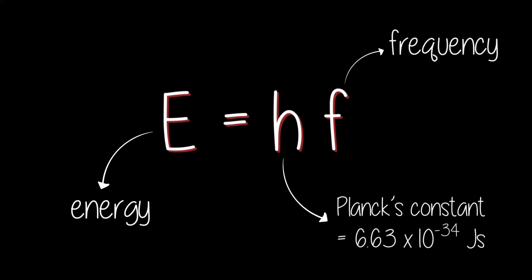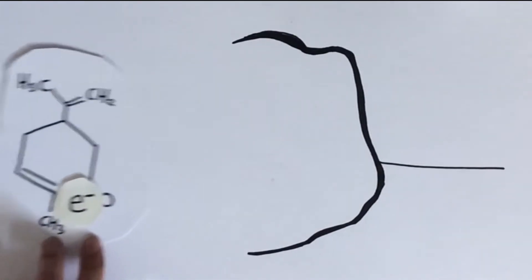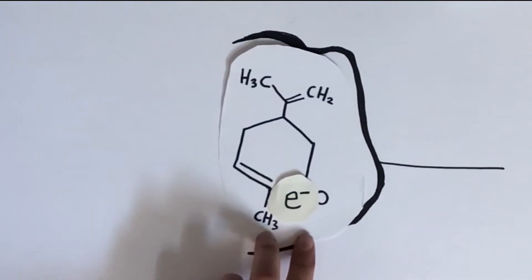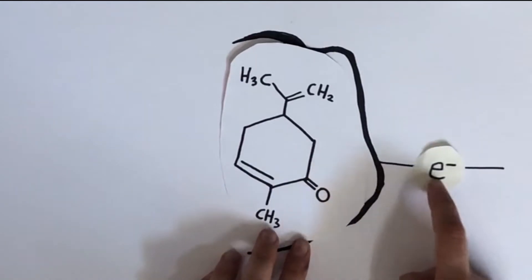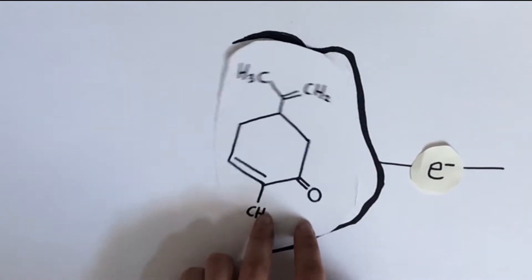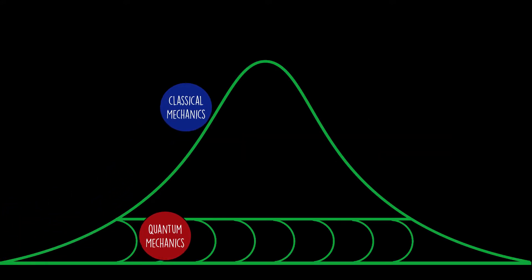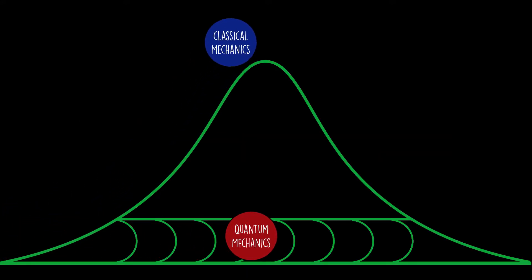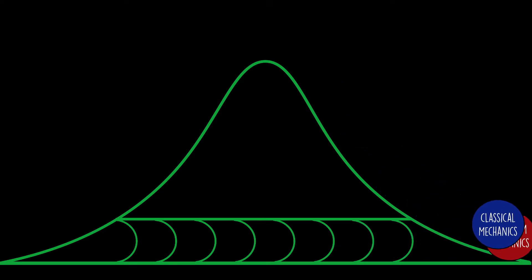It is important to remember that this frequency relates to an energy, and in order for a signal transduction pathway to be triggered by the receptor, the odorant's corresponding vibrational energy must be such that it allows the tunnelling of an electron through the molecule. But what does this tunnelling refer to?